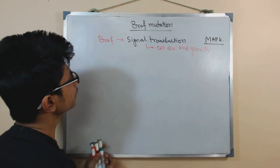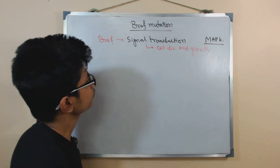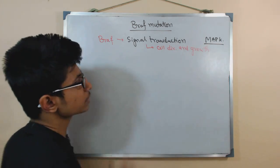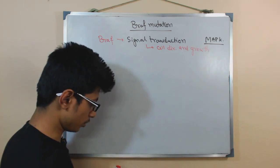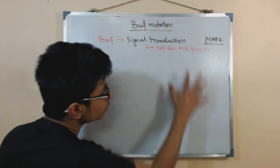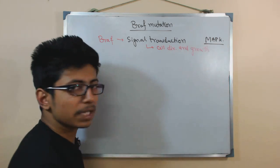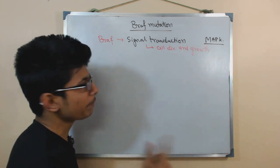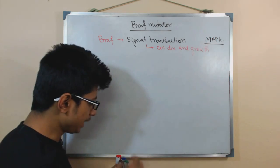BRAF is related with cell division and growth. So it is a signal transduction molecule related with cell division and growth, and the whole pathway of cell division and growth is the MAP kinase pathway — so BRAF is related with the MAP kinase pathway.